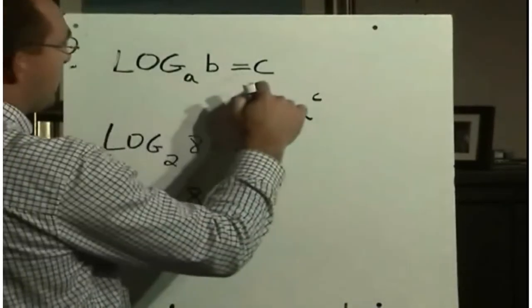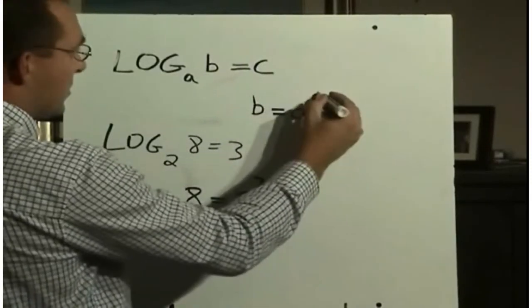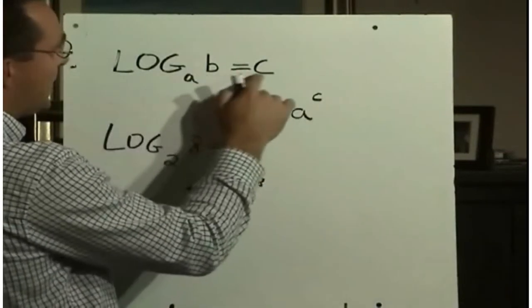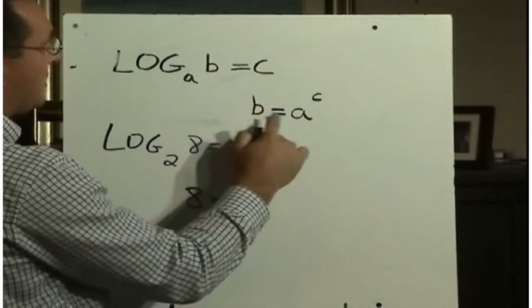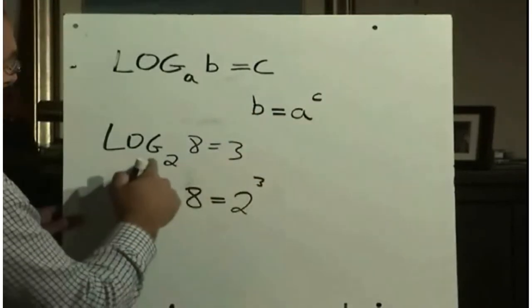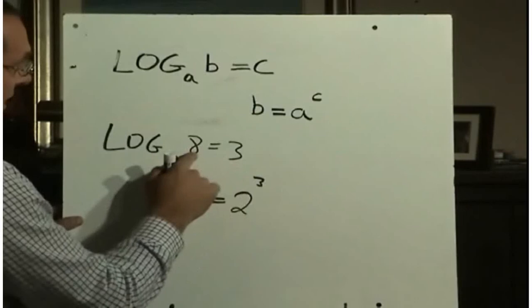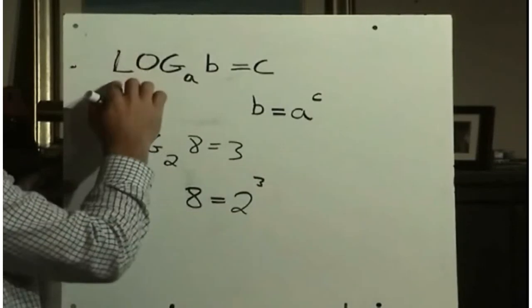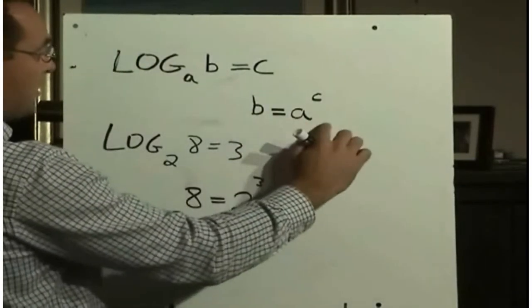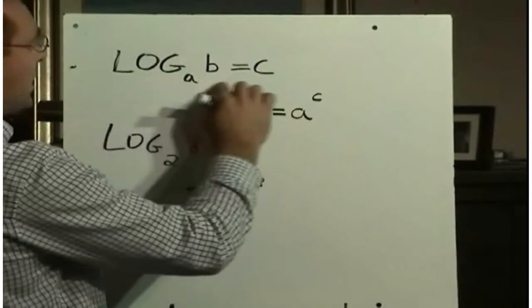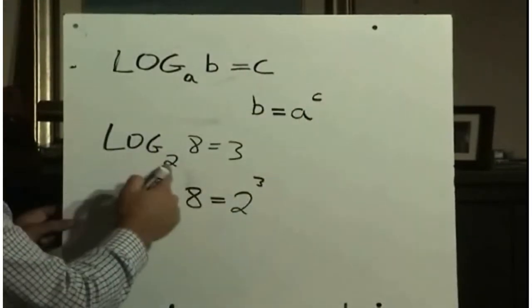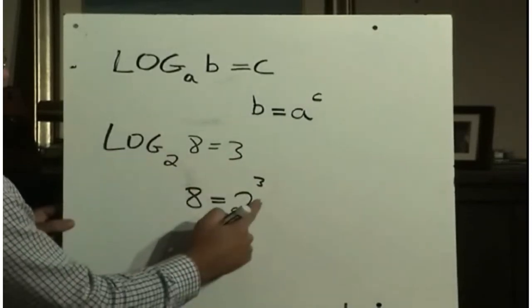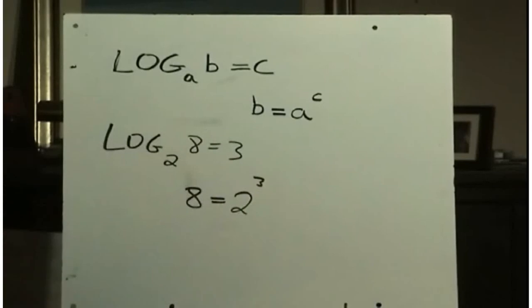So this is how we can take a logarithm and write it as an exponent, and sometimes we like to call this the back rule. Log base A of B equals C means that B equals A to the power of C. So as an example, log base 2 of 8 equals 3 means that 8 equals 2 to the power of 3. So this is a really important rule, you need to make sure that you know how to take a logarithm and write it as an exponent, or to take an exponent and write it as a logarithm. Make sure you're able to use that formula to convert between one and the other.